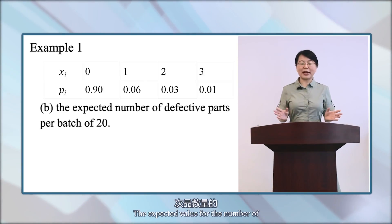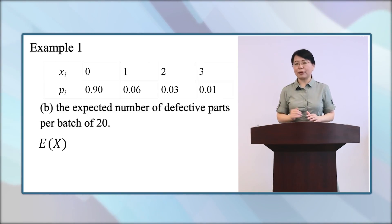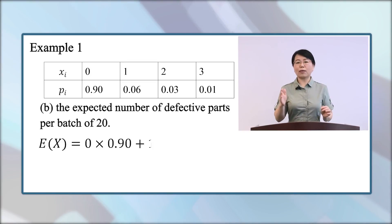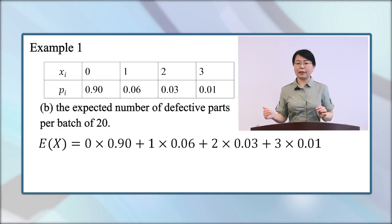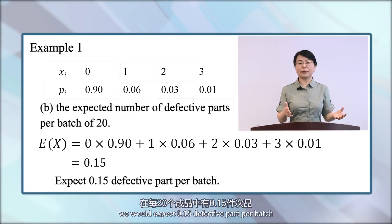All right, the expected value for the number of defective parts is E(X). And according to that table, we have that it's equal to 0 times 0.90 plus 1 times 0.06 and so on. And we can find that the sum is 0.15. Thus, on average, we expected 0.15 defective parts per batch.